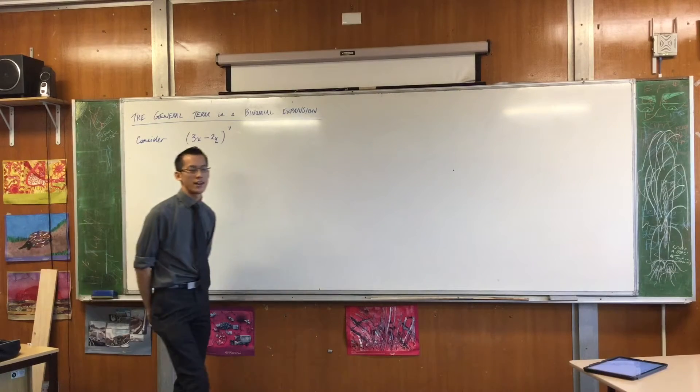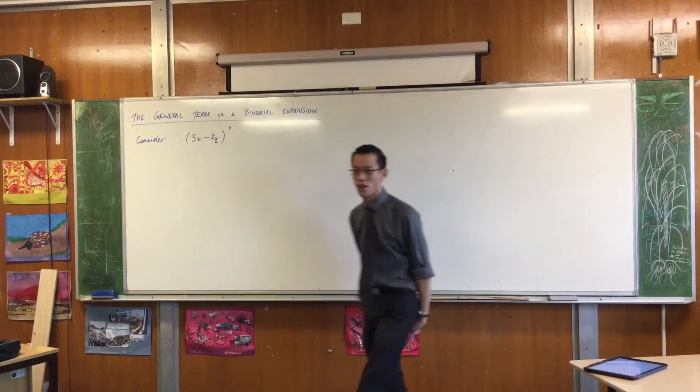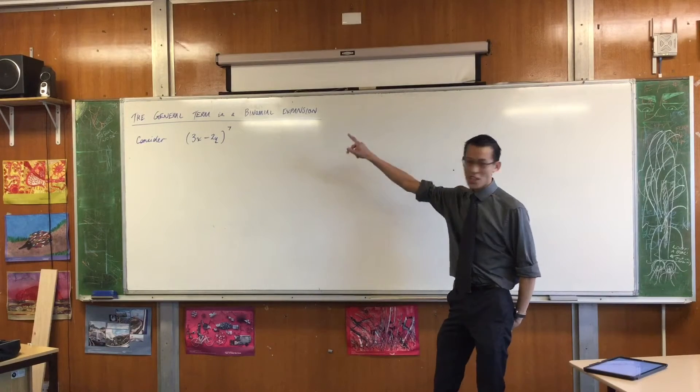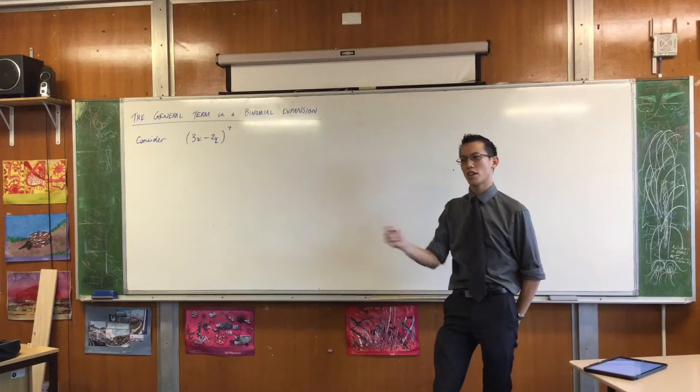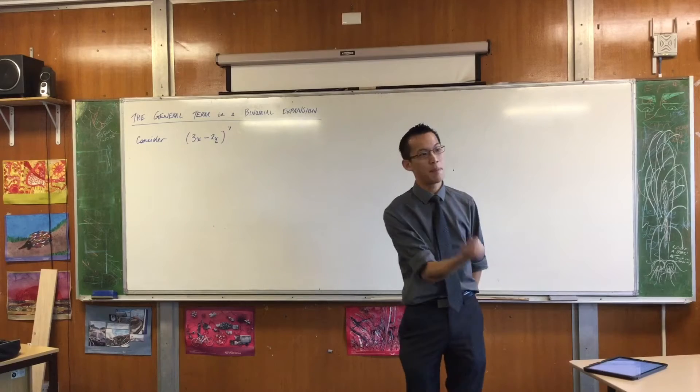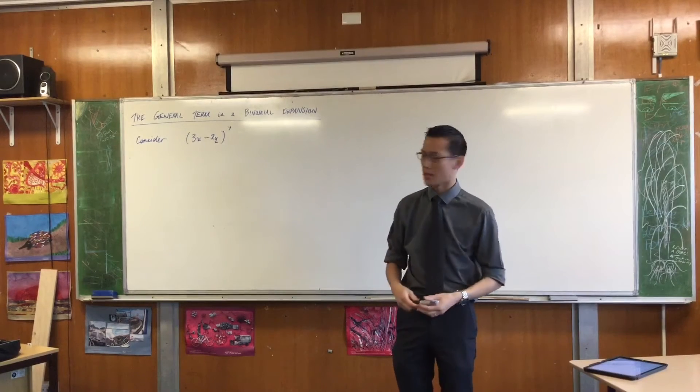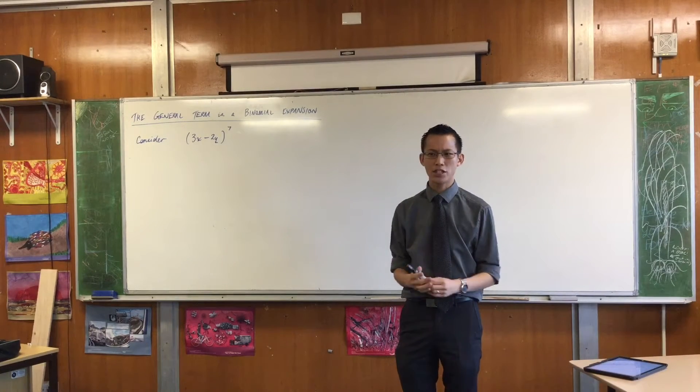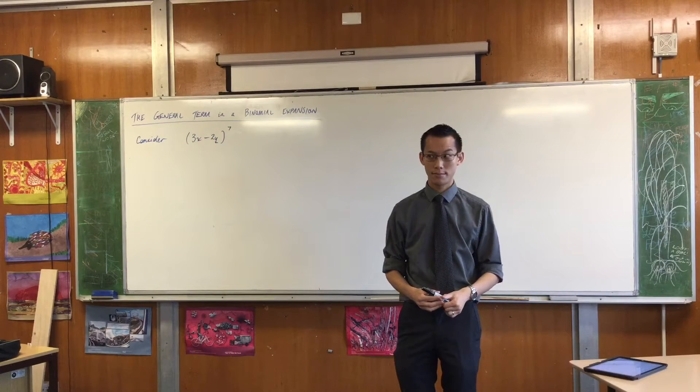Here's the idea. If I gave you this kind of binomial expansion to the power of seven, it's probably just within reach of what you'd be expected to actually write out by hand. If it's to the power of seven, how many terms will there be in the final expansion?